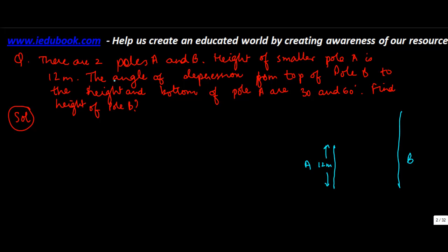The angle of depression — depression is when it goes below your eye level. From the top of pole B to the top and bottom of pole A, the angles are 30 degrees and 60 degrees.